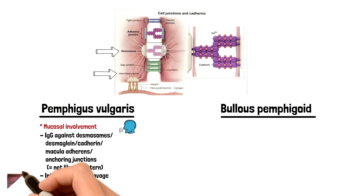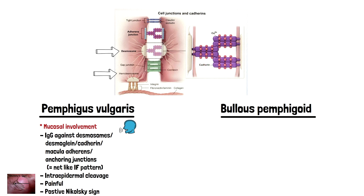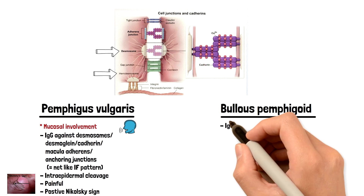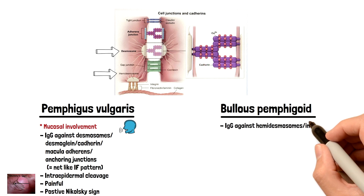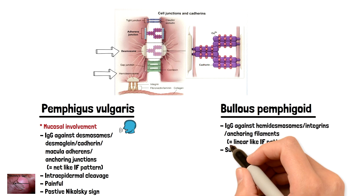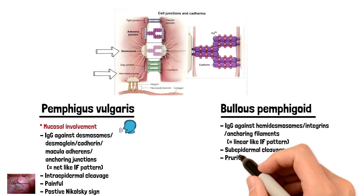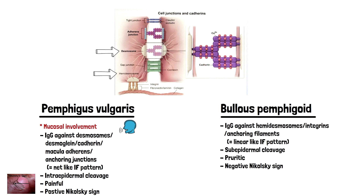Pemphigus Vulgaris will have a positive Nikolsky sign, so when you put lateral friction on the blister, it will shear. This is unlike Bullous Pemphigoid, which will have a negative Nikolsky sign. Bullous Pemphigoid affects hemidesmosomes — essentially IgG against hemidesmosomes. They can also be called integrins, which is what they attach to, or anchoring filaments.